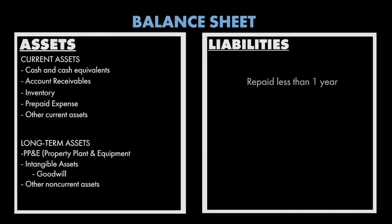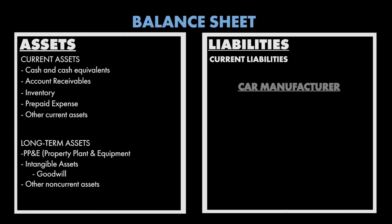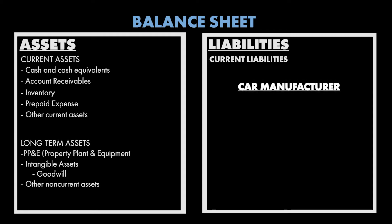Anything that is going to be repaid within one year is called a current liability. For example, let's say that you're a car manufacturer and you have a tire supplier. They send you tires, you send them money. Usually you're going to pay them within one year. This is called accounts payable.